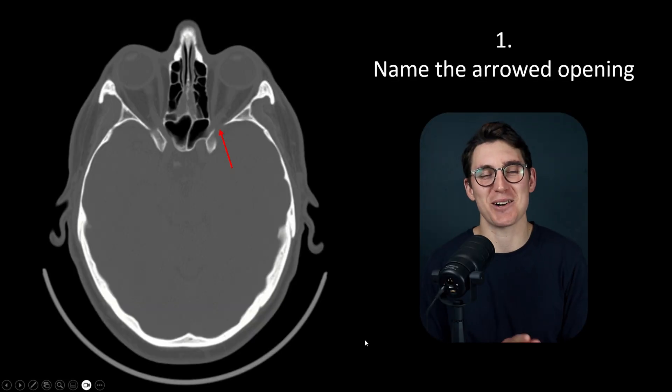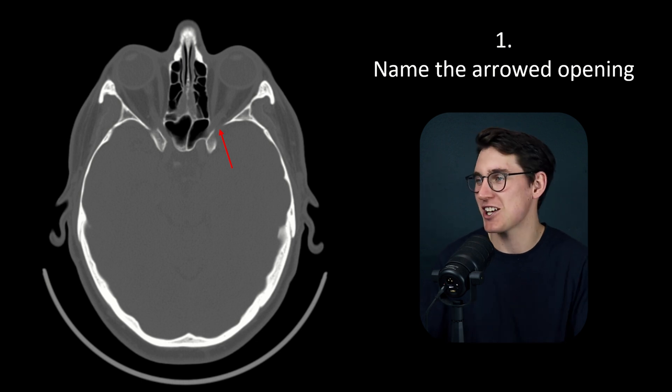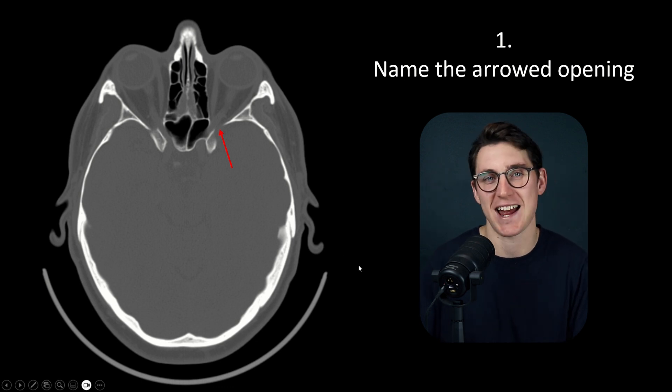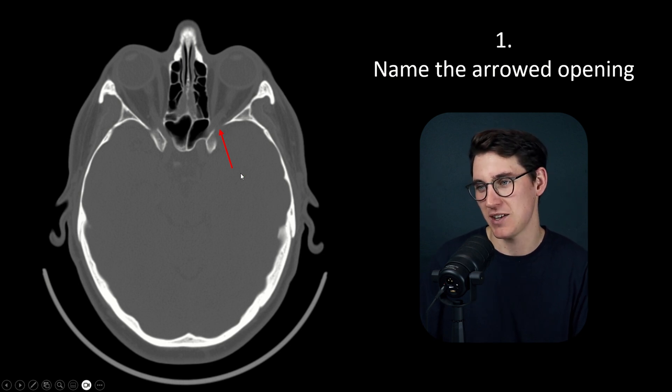The same thing happens in the neuroanatomy course. So enjoy this talk — go ahead and answer the questions first and I'll see you at the other side. Let's go through the first 10 questions in this anatomy question bank. First up, we're asked to name the arrowed opening. You can see we've got an axial bone-windowed CT scan here, and this is the opening we're asked to label.